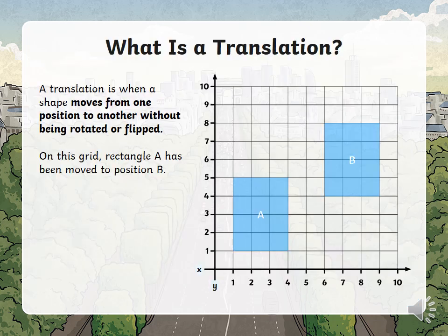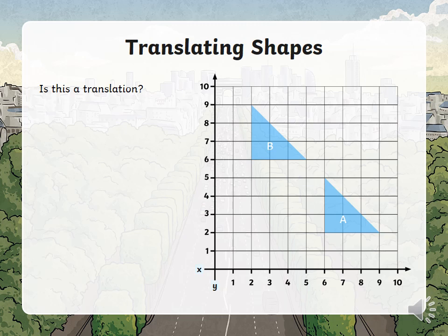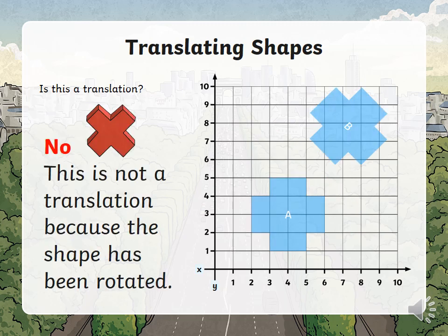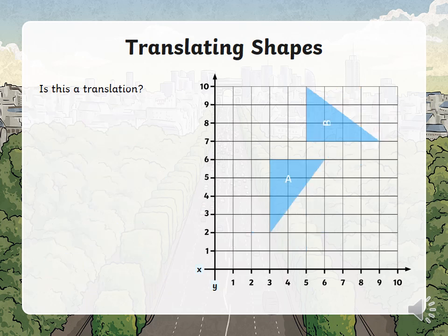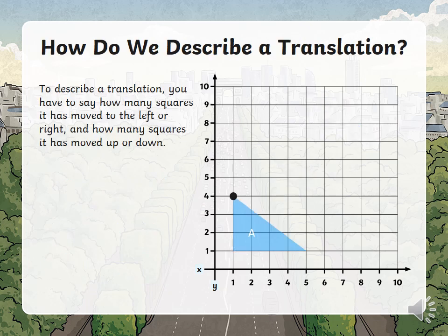So what is translation? A translation is when a shape moves from one position to another without being rotated or flipped. On this screen a rectangle has been moved to position B — this is not a translation because the shape has been rotated. Is this a translation? Yes, this is a translation. Is this a translation? No, this is not a translation because the shape has been rotated.